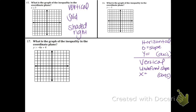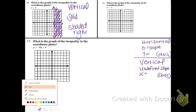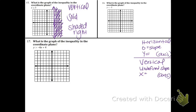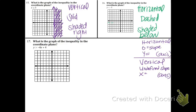So now let's put all that to use: at the 3, vertical line, shaded right. Next one: y is less than negative 1. It is a horizontal line. It is also dashed because of that less than sign. And lastly, it's shaded below. Negative 1, dashed, shaded below.